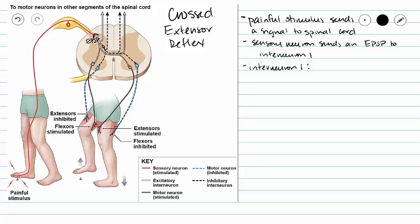Interneuron 1, which we are going to show in red, is going to send an EPSP to our ipsilateral flexors, an EPSP to our contralateral extensors, and information up to our brain.